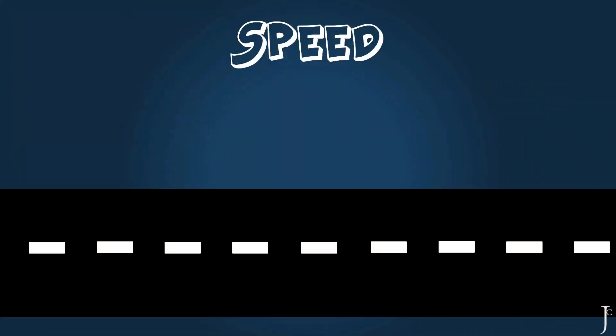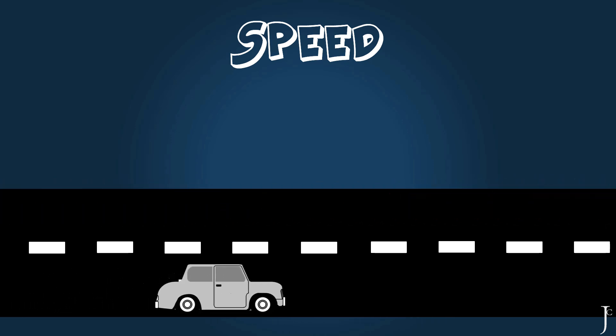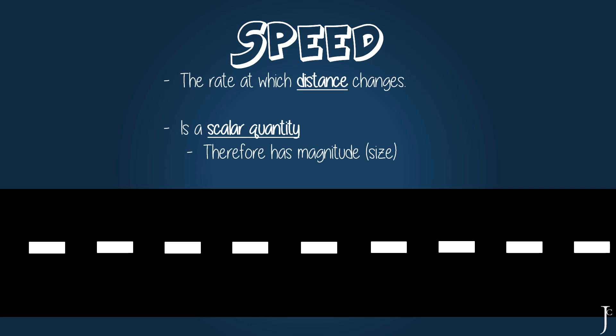So let's learn about the term speed. So what is speed? Speed is basically looking at how fast, or how slow, an object travels. Technically, we're looking at the rate at which distance changes, and it is a scalar quantity, so it has magnitude or size.